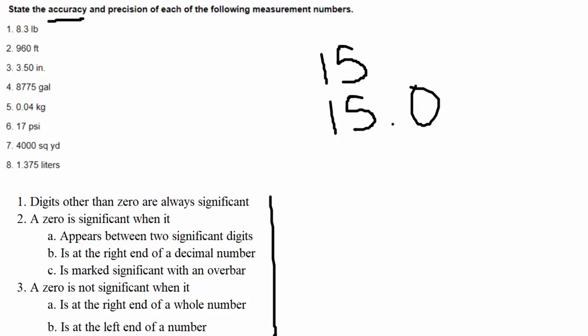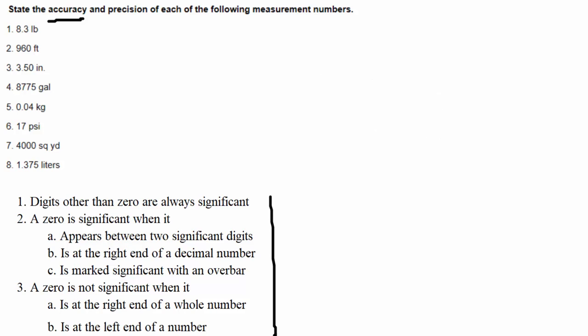To illustrate, consider the number 15 versus 15.0. Technically they have the same value — fifteen dollars is fifteen dollars. But if I measured something and said it's 15.0 inches, that means it is precise and accurate up to the tenths place. Fifteen point zero is considered more accurate and more precise because of that added decimal zero, even though the values are the same.